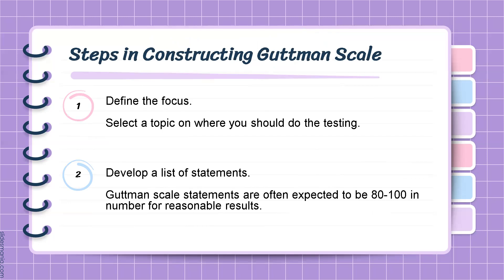Steps in constructing Guttman's scale: The first step is defining the focus — select a topic on which you will be testing. Then, develop a list of statements. Guttman's scale statements are often expected to be 80 to 100 in number for reasonable results.